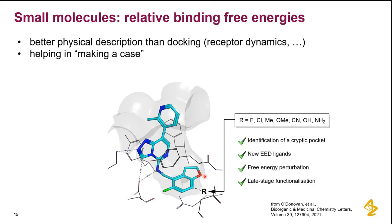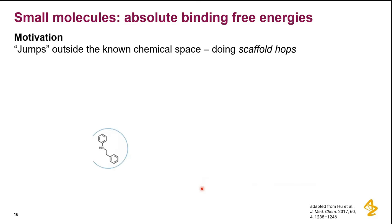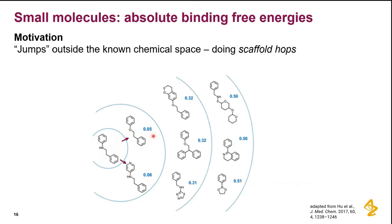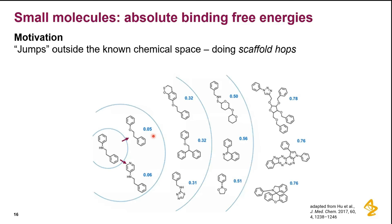The main problem — as Vitas also alluded to — is that these methods require a large chunk of the molecule to remain the same, requiring phase space overlap. In other words, the modifications need to be relatively small. Going from one compound to a nearby analog is easy, but these larger jumps may already be out of scope for relative binding free energy techniques.